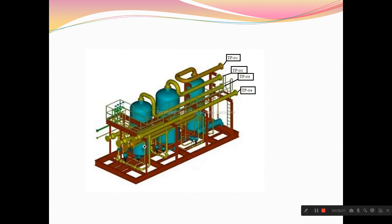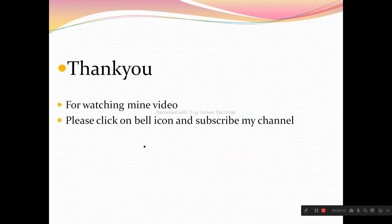Here is an example of a skid — some existing skid is there and you need connections for this skid. This is the way it shows you the tie point. When you extract the isometric, it gives you the tie point in the isometric as well, and the P&ID also shows the tie point number. So to summarize, a tie point exactly means: from where you are getting a connection from the existing part, and from there you are doing a new line.